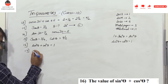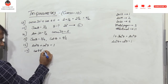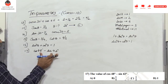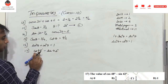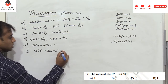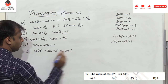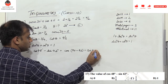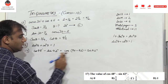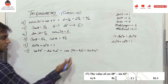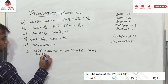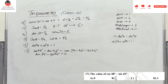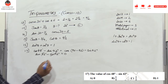Problem 17 (MCQ): cos48° − sin42°. Notice that 48 + 42 = 90°, so cos48° = cos(90° − 42°) = sin42°. Therefore sin42° − sin42° = 0. The answer is 0, corresponding to option A.